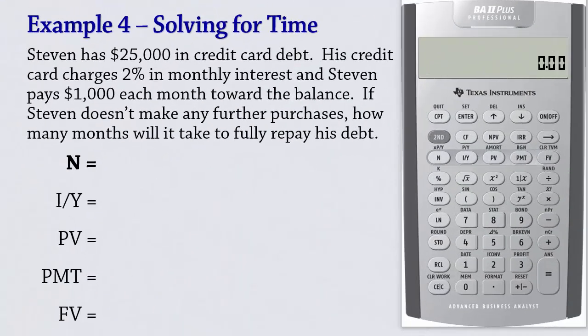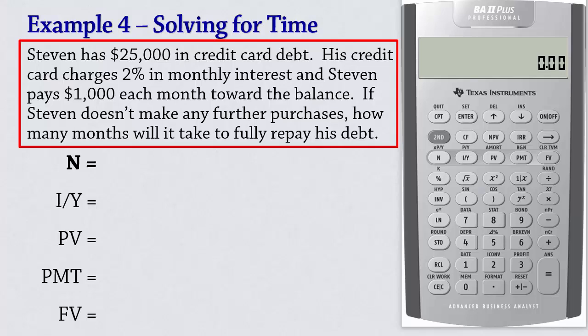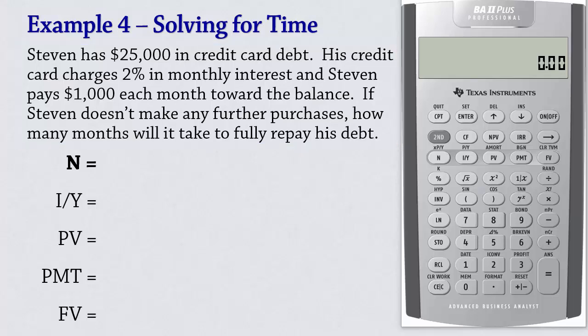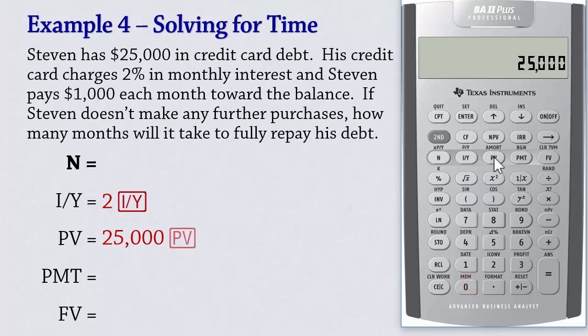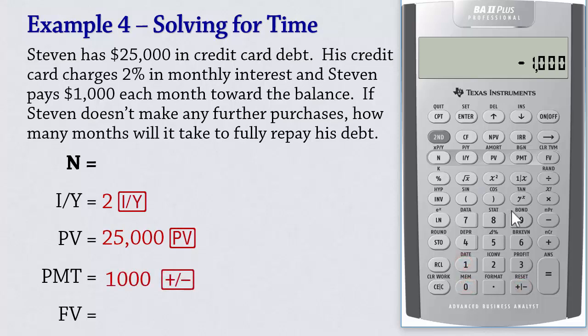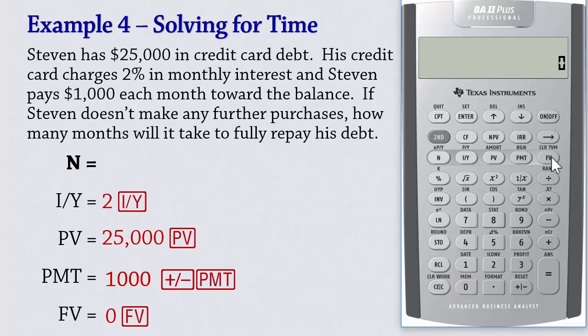Next, we solve for time. Steven has $25,000 in credit card debt. His credit card charges 2% in monthly interest and Steven pays $1,000 each month towards the balance. If Steven doesn't make any further purchases, how many months will it take to fully repay his debt? We input 2 IY, then $25,000 present value for the debt amount. Since payment is made to reduce the debt, we input it as a negative value: negative $1,000 PMT. Since the debt will be fully repaid, we input 0 for future value. We then compute N, which gives 35 months.